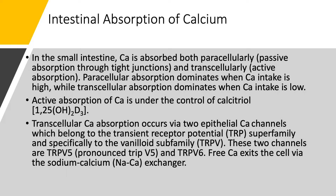Intestinal absorption of calcium: in the small intestine, calcium is absorbed either paracellularly or passively through the tight junctions, or transcellularly and actively. Paracellular absorption dominates when calcium is high — you don't need active transport then — while transcellular absorption dominates when calcium is low, because you have to reclaim all that calcium actively. This is the same mechanism we discussed with magnesium and will apply to phosphorus as well. Active absorption of calcium is always under the control of calcitriol, the most active form of vitamin D, which is 1,25-dihydroxyvitamin D3.